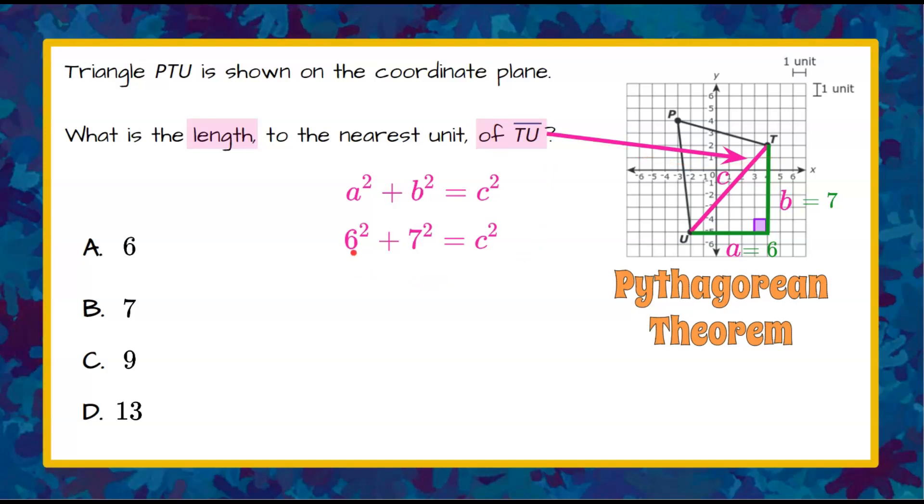So let's square our values. 6 squared is 36, 7 squared is 49. Now we're going to add 36 plus 49, which is 85.